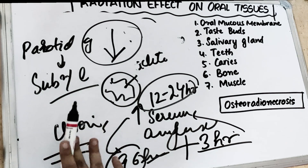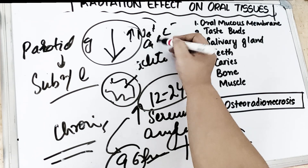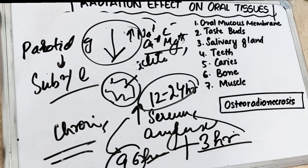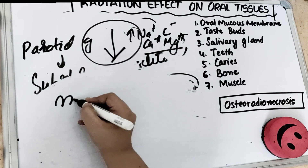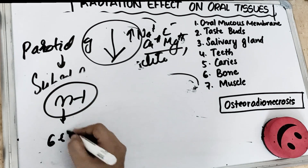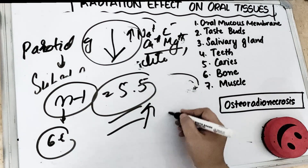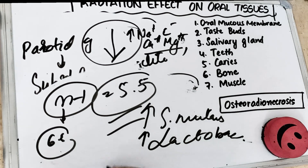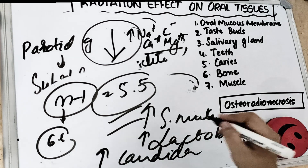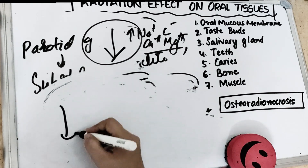Changes in saliva composition include increases in sodium, calcium, and magnesium ions, and protein also increases, but the lubricating properties of saliva are lost. The pH drops by approximately 1 — if normal pH is 6.5, in radiation therapy patients it becomes 5.5. This increase in acidity leads to increased Streptococcus mutans causing caries, increased lactobacilli which progresses caries, and increased Candida causing candidiasis. The buffering capacity of saliva is reduced by up to 44%.